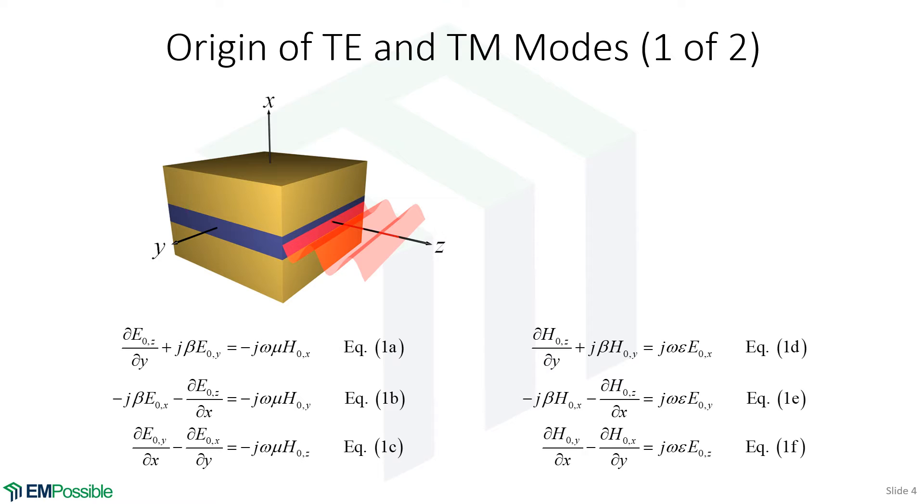So slab waveguides, even though they are not homogeneous, they have a core and they have a cladding, they still support TE and TM modes. Let's talk about why that is.